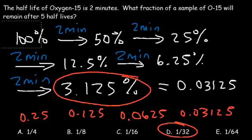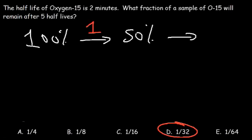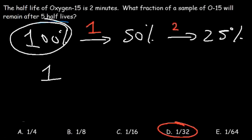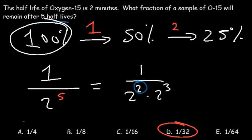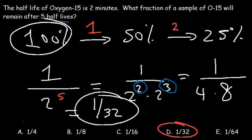There's a much faster way if you understand it. We started with 100%, which represents 1. Each half-life divides by 2. After five half-lives, we divide 1 by 2 five times — that's 1 over 2⁵. Two to the fifth: 2² = 4, 2³ = 8, and 4 × 8 = 32. So you get 1/32 — the same answer, much faster.